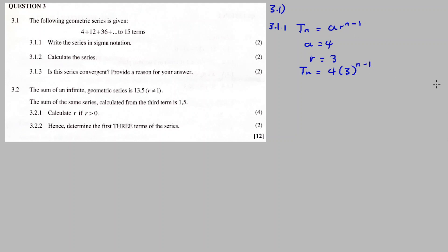So our nth term is 4 times open bracket 3 raised to the exponent n minus 1. Therefore, the sigma notation is 4 times 3 to the power n minus 1, with n equal to 1 on the bottom and 15 on the top. That's our answer for sigma notation, 3.1.